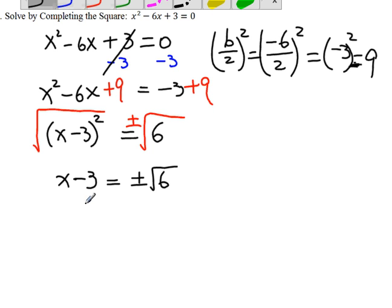To solve for x, we're going to add 3 on both sides. We get x equals 3 plus minus radical 6.